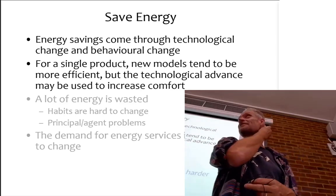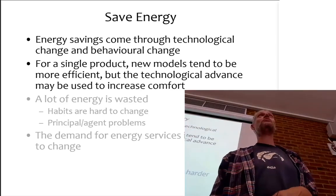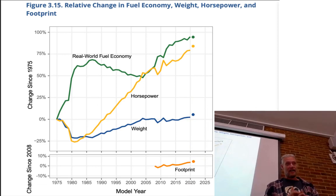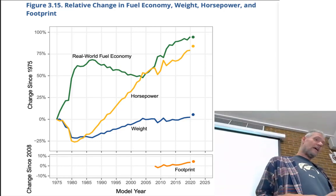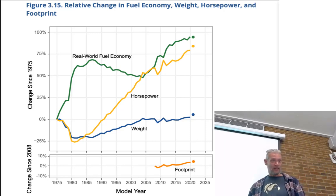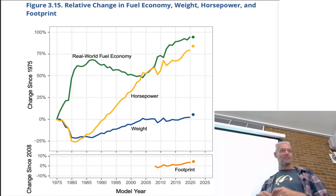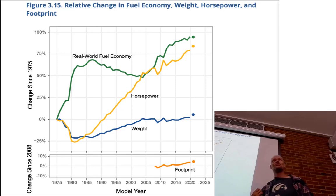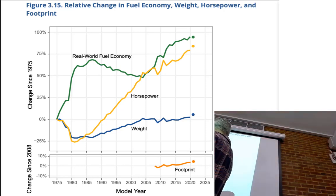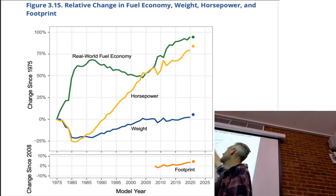But that is not where the story ends at all, because energy efficiency improvements can also be used for other purposes. The best example comes from cars in the United States. Looking at data from 1975 to 2020, fuel economy improved quite rapidly through the 70s until about 1985 and then it stabilized — it stayed the same for roughly 15 to 25 years, and actually went down a little bit. So technological improvement did not stop; it just wasn't used to cut fuel use.